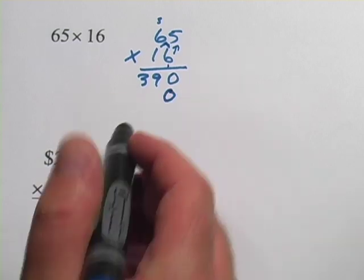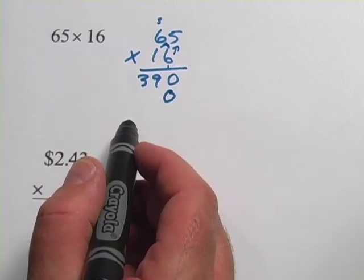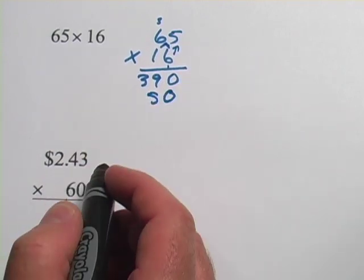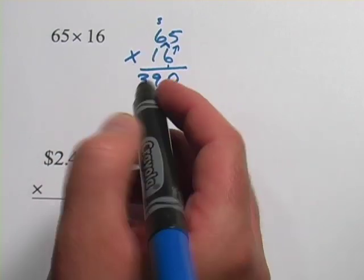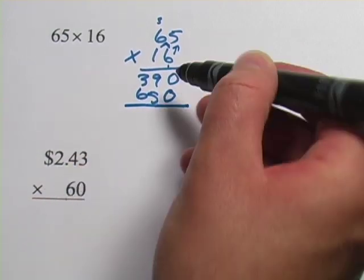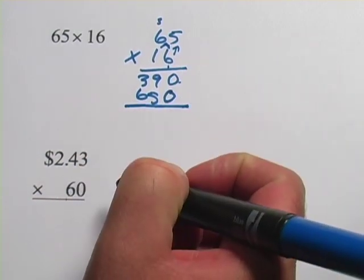We start with a 0 to represent that fact that it's in the tens digit. Now we take 1 times 5 is 5, nothing to carry there, and 1 times 6 is 6, nothing to carry there, and then we simply add those two results.